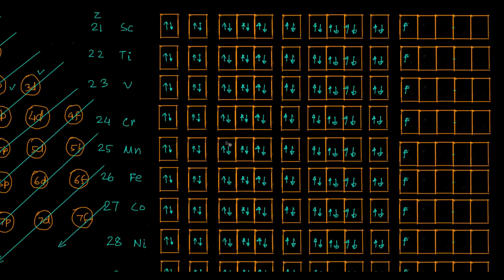The first electron goes to 3d. For titanium, according to Hund's rule, the second electron does not pair up - it moves to the next 3d orbital. For vanadium, it moves to the next d orbital, and for chromium it moves to the next one again.